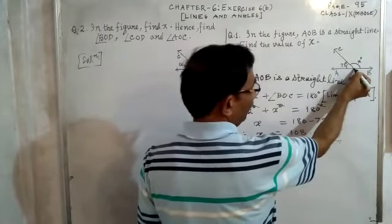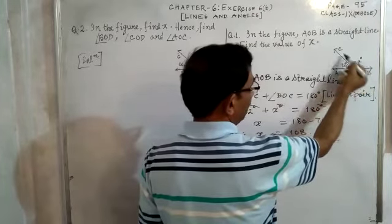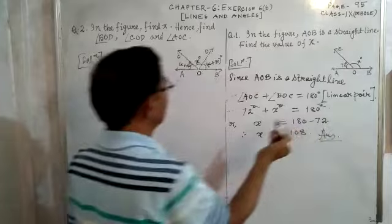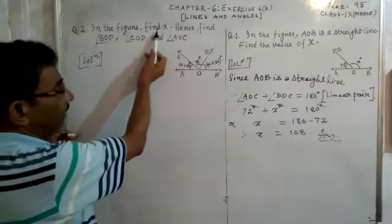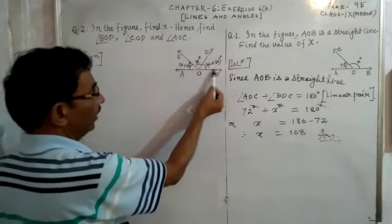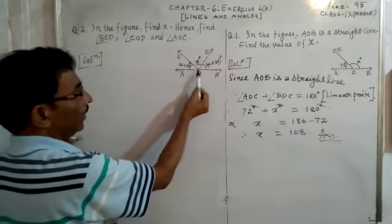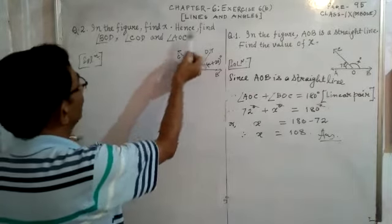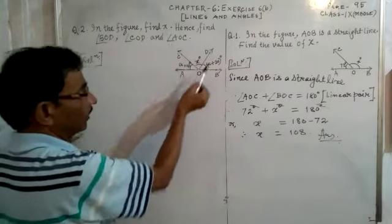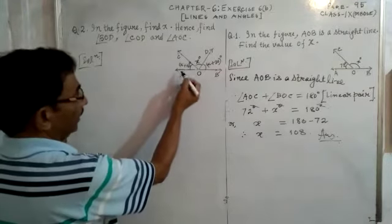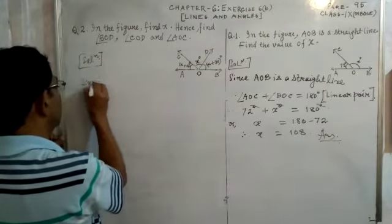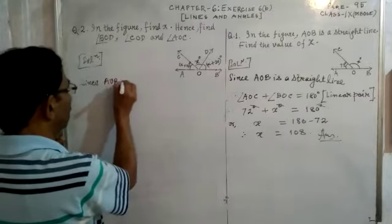Remember: if AOB is a line and O is a point on it, then the sum of the two angles AOC and BOC will be equal to 180 degrees because they form a linear pair. Now look at question number two. In the figure, AOB is a straight line and there are angles COD, AOC, and BOD. We have to find the value of x.